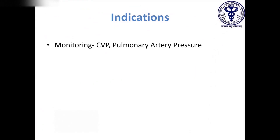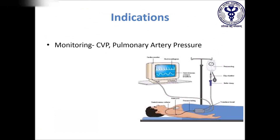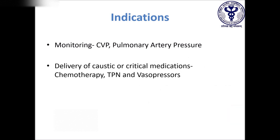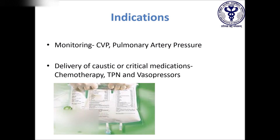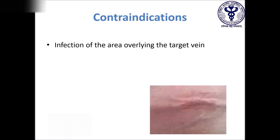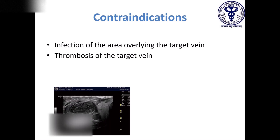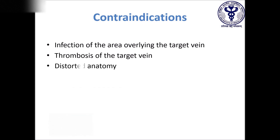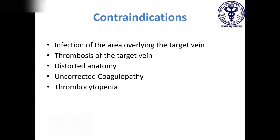Central line is used to monitor parameters such as central venous pressure and pulmonary artery pressure, deliver chemotherapeutic drugs, total parenteral nutrition and vasopressors, and provide access for blood circuits such as hemodialysis and plasma exchange. The contraindications include infection of the area overlying the target vein such as cellulitis, thrombosis of the target vein, distorted anatomy, uncorrected coagulopathy, and thrombocytopenia.